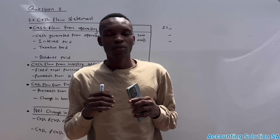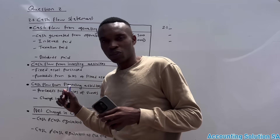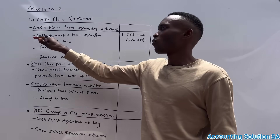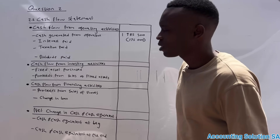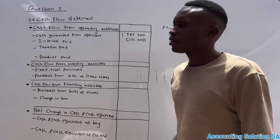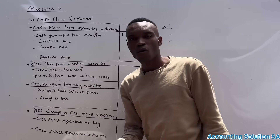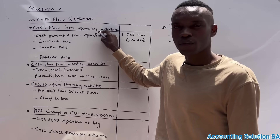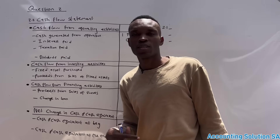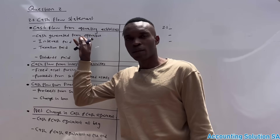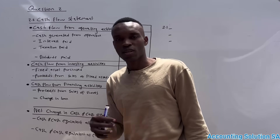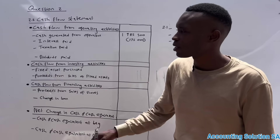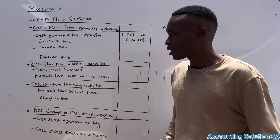In this video we are going to discuss the cash flow statement. You need to know the first note, which is cash generated from operations, and what falls under it. This note contains a lot of marks, so make sure you know the format and how to calculate it. You also need to know how to calculate interest paid, taxation paid, and dividends paid, which we will cover in this lesson.